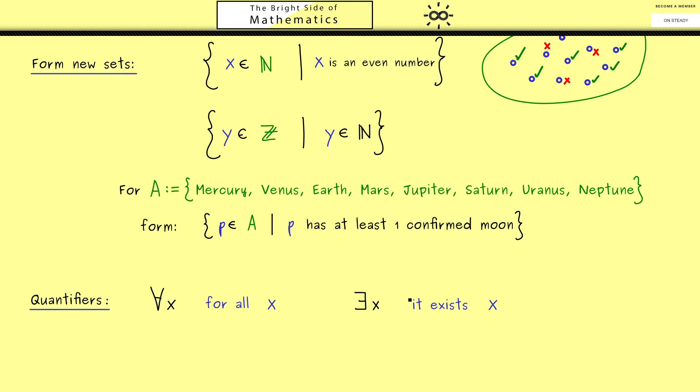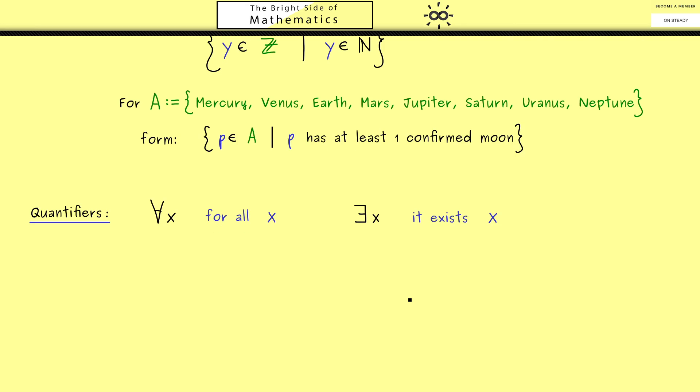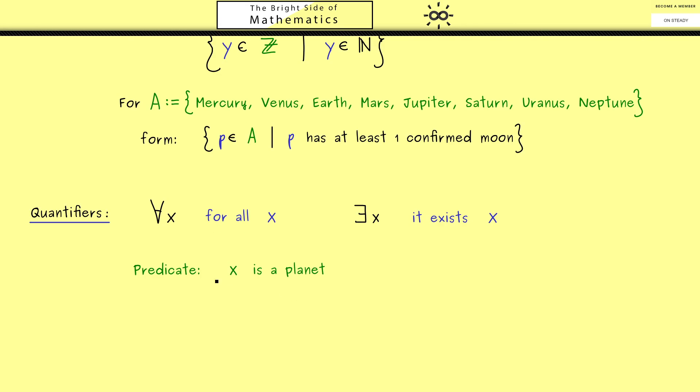We always combine a quantifier with a predicate and what comes out is a logical statement. For example, take the predicate 'x is a planet.' The combination reads 'for all x: x is a planet.' Since we go through all objects and check each one, we don't have any undetermined variable left, so we get a logical statement with a well-defined truth value. Because not every object is a planet, it's a false logical statement.